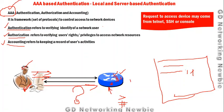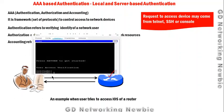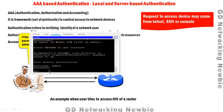As an example, when a user tries to access the IOS of a router, they will be prompted to provide a username and password. Once they provide the correct credentials, they are allowed to access the IOS of the router, where they can perform administrative tasks or whatever tasks they are authorized to do. That is the basic job of Triple-A.